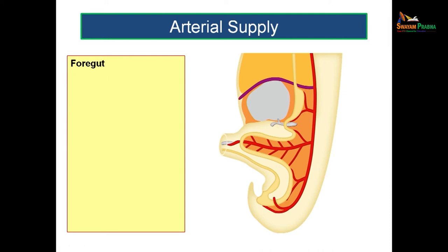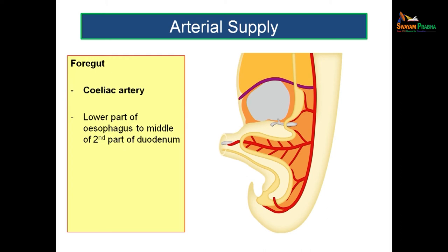Now let us see about the arterial supply. Each foregut, midgut, and hindgut has its own arterial supply. The major branches are all coming from the abdominal aorta. The first artery is known as the celiac artery. The celiac artery supplies the lower part of the esophagus up to the middle of the second part of the duodenum, because that is the limit of the foregut. So starting from the lower part of the esophagus, the entire stomach, the first part of the duodenum, and the second part up to the opening of the major duodenal papilla — you get the blood supply from the celiac artery.